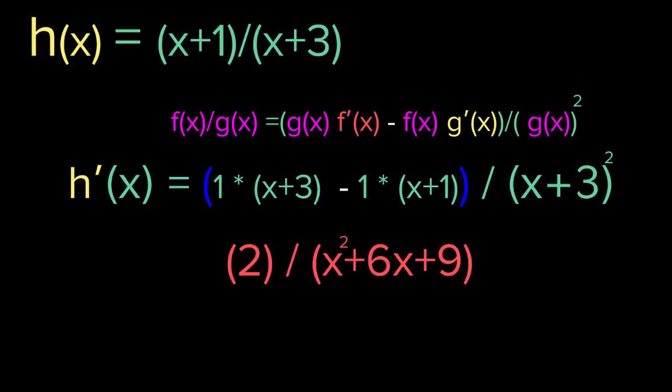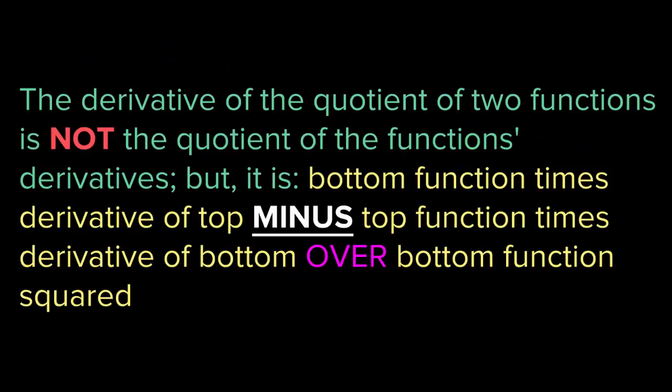This is the quotient rule — how you find the derivative of two functions that are divided, one on top and one on bottom. You take the bottom function multiplied by the derivative of the top, minus the top multiplied by the derivative of the bottom, over the bottom squared. Please don't forget the minus between the two terms — you don't have a plus like in the product rule, you have a minus. Remember: bottom times derivative of top, minus top times derivative of bottom, over bottom squared.